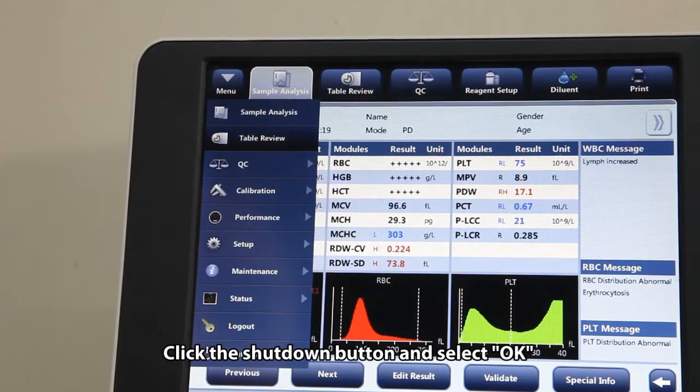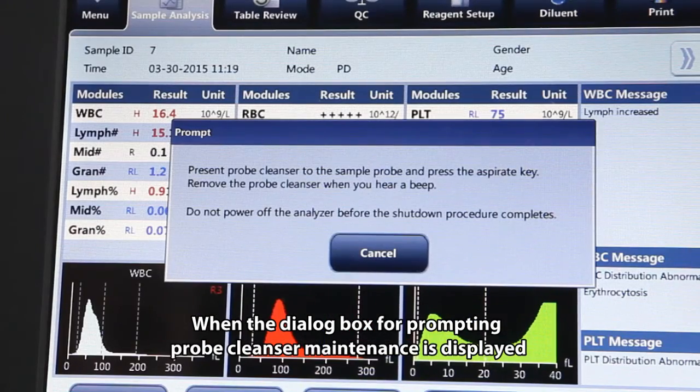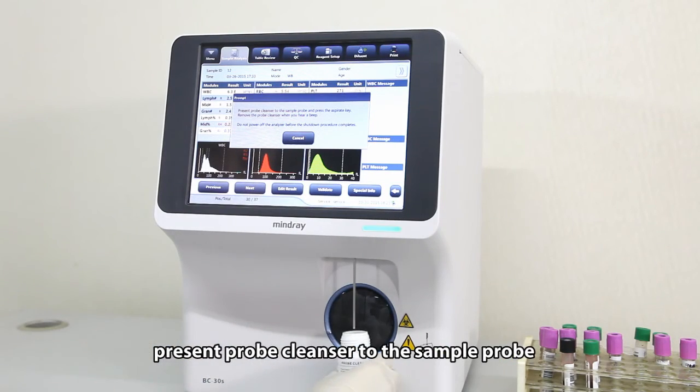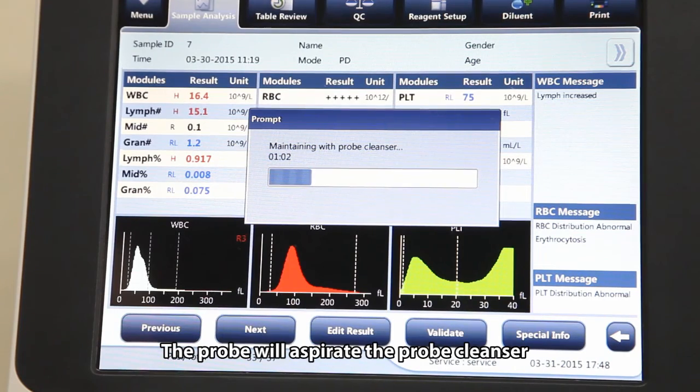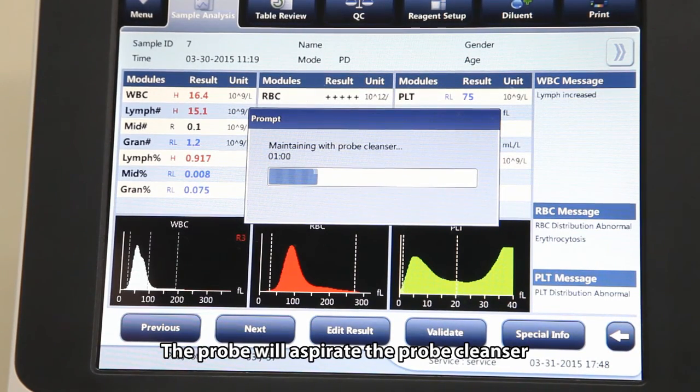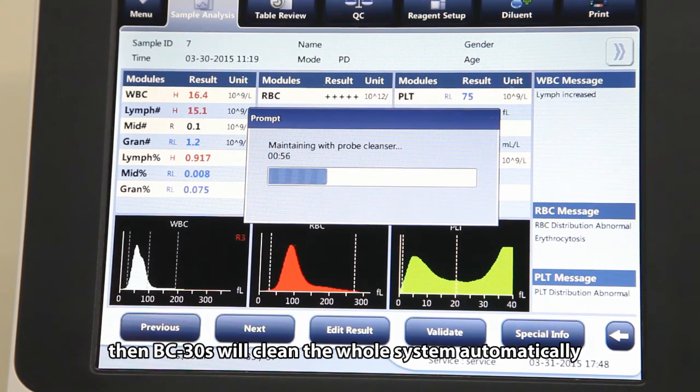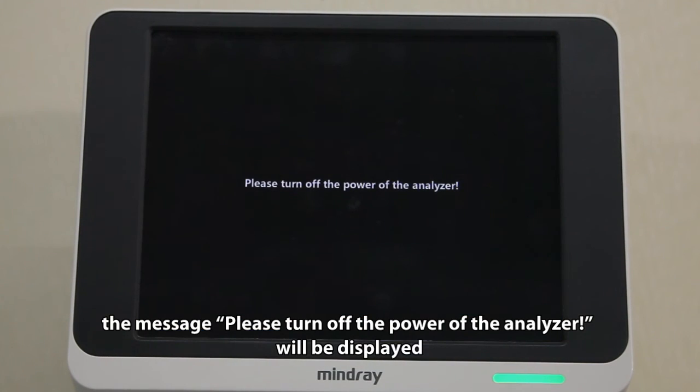Click the shutdown button and select OK. When the dialog box for prompting probe cleanser maintenance is displayed, present probe cleanser to the sample probe, then press the aspirate key. The probe will aspirate the probe cleanser, then BC-30S will clean the whole system automatically. After shutdown finishes, the message Please turn off the power of the analyzer will be displayed. Press the power switch on the back of the instrument to power off.